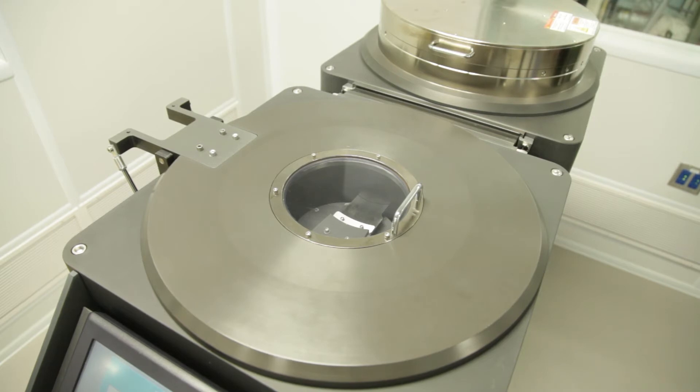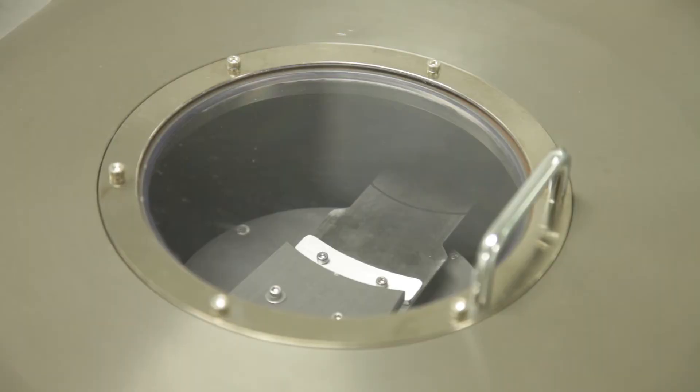If you have patterned photoresist on your sample, the plasma will only etch the material layer where it is exposed through this mask, allowing you to etch a pattern into your layer.